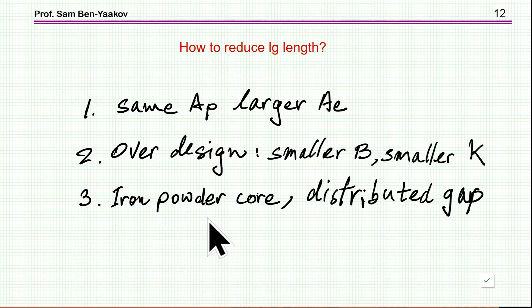Now, the air gap that we got is pretty large, and we know this is harmful, because it's first of all radiating, and then it is causing losses in the wires which will be close by. So, the question is, how can we reduce the length of the gap? Well, if you use the same AP, but with a larger cross-section area, as we have seen, you will reduce the length. But this is quite limited, there's that much you can do. Of course, you can do an over-design. You can specify a smaller B and a smaller K, and this will make the core larger than the optimal one, but then, the gap will be smaller. And of course, you can go to other types of cores, like iron powder, or distributed gap, which will reduce the harmful effect of a large gap.